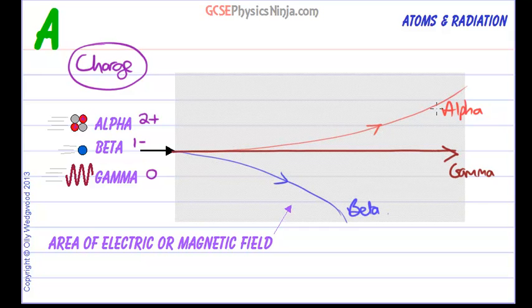A couple of things to notice: alpha is not deflected as much as beta and the reason for that is because alpha particles are 2000 times more massive than beta particles. So it's quite hard to deflect them. Think of it like a cannonball compared to a pea.